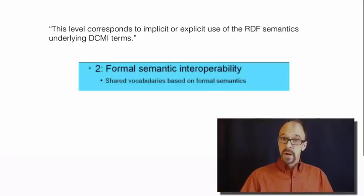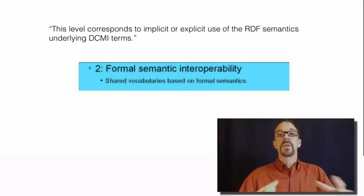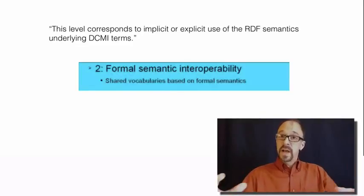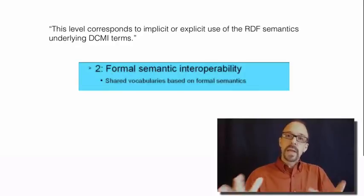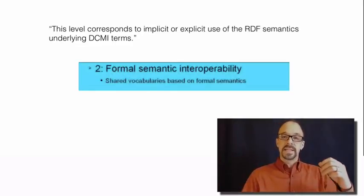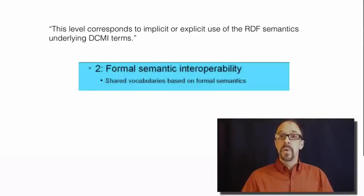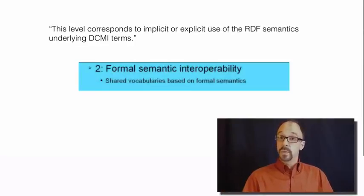The abstract model articulates all of the constructs in the universe of Dublin Core and of metadata generally, and those constructs are defined in RDF documents. Level two requires explicit or at least implicit use of those RDF semantics — you want to say that an element is defined as a type of property, but you don't necessarily need to point to the RDF document to formally define what a property is and how to interpret it.